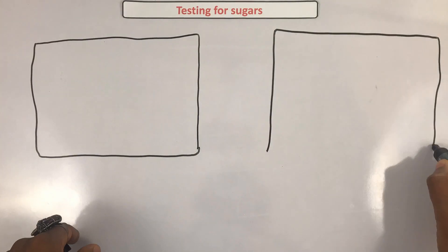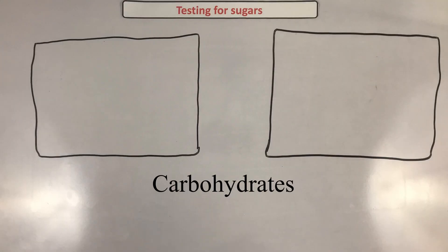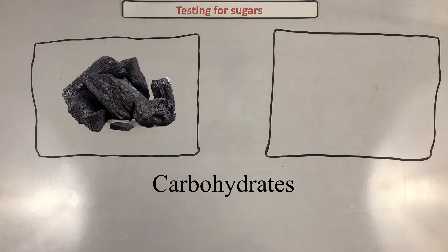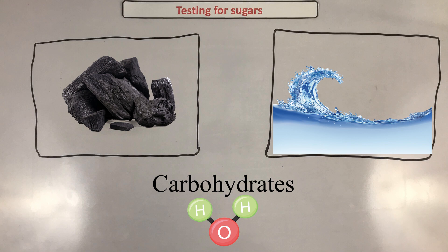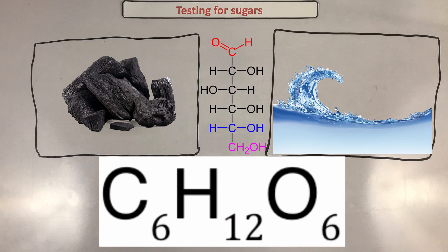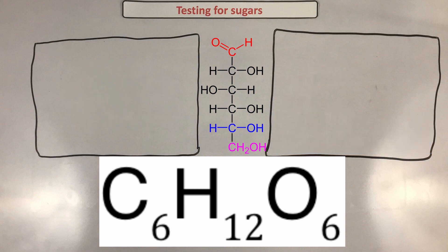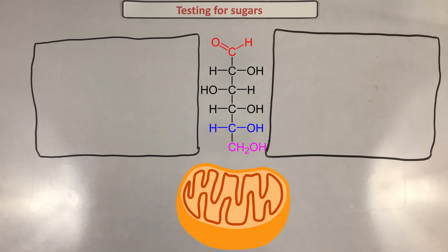Now before we test the sugars, let's just make sure we are all cool with the definitions. Carbohydrates - carbon that is hydrated. Remember that water is H2O. Let's look at a formula that you're meant to learn - that's for glucose. Glucose is C6H12O6. For every one carbon and oxygen you have two hydrogens: H2O. Glucose, of course, is used in aerobic respiration in plants and animals.